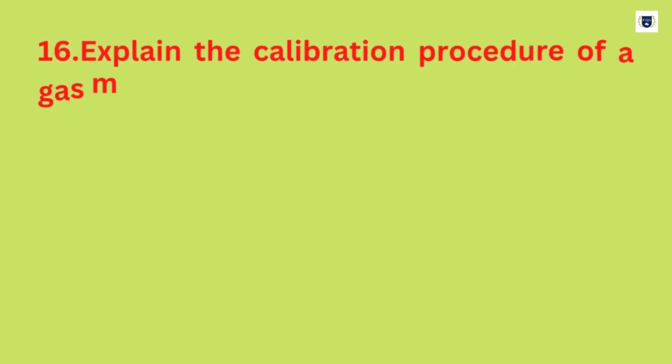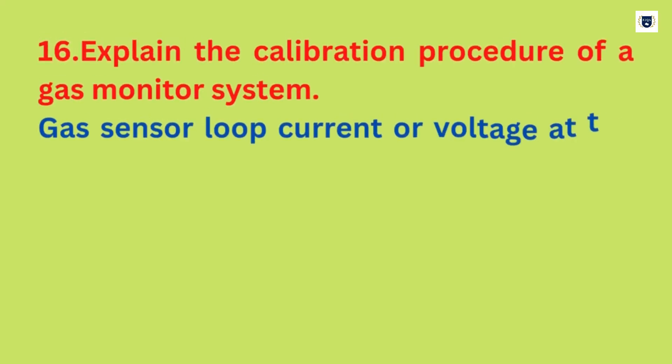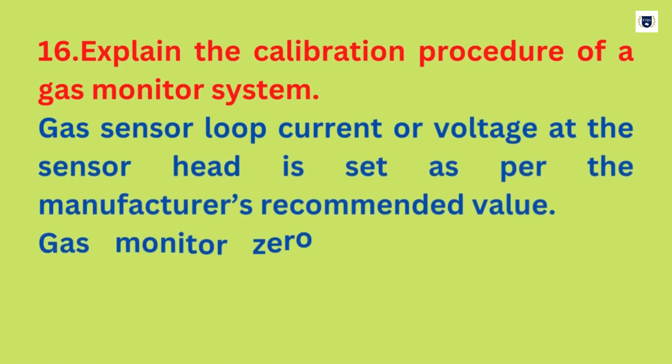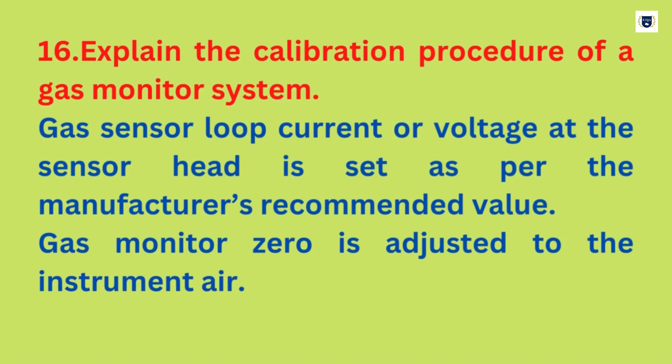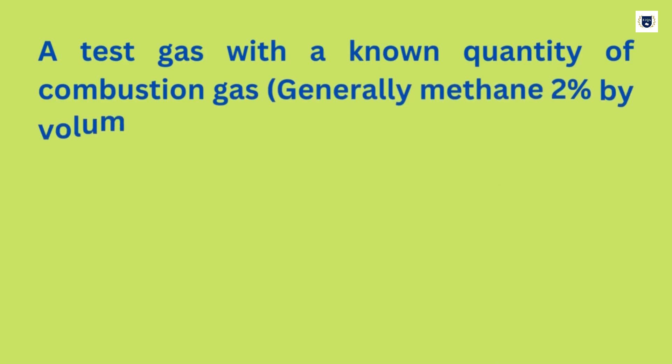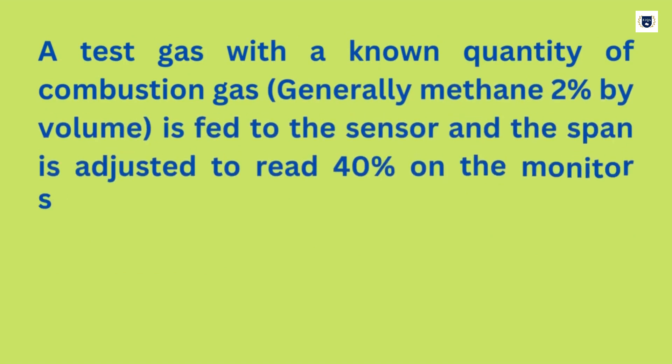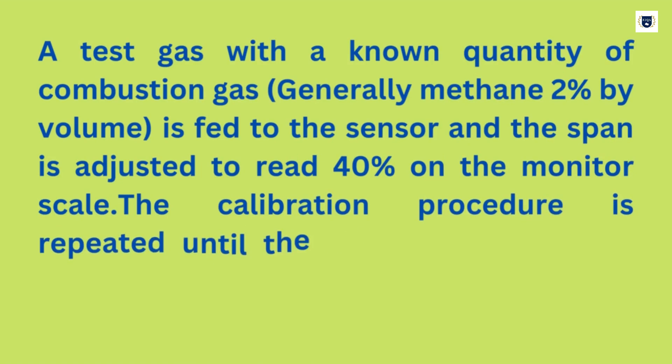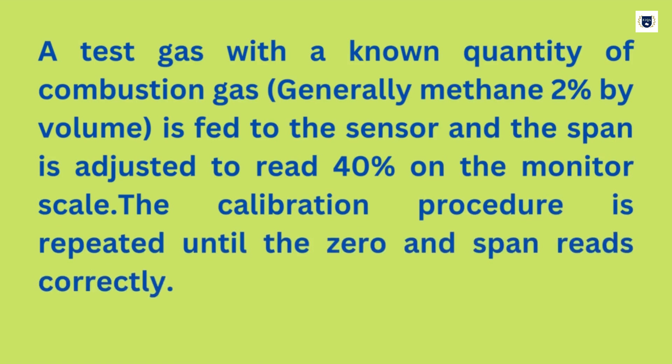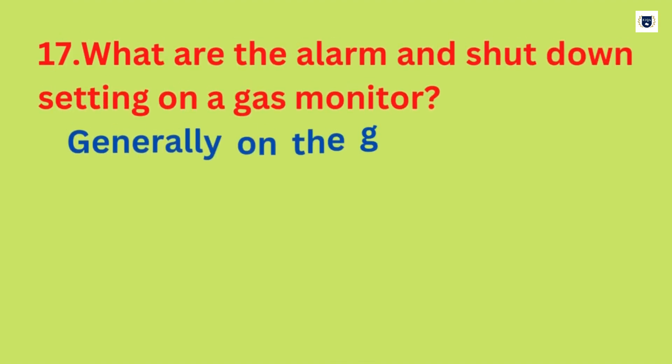Explain the calibration procedure of a gas monitor system. The gas sensor loop current or voltage at the sensor head is set as per the manufacturer's recommended value. The gas monitor zero is adjusted to instrument air. A test gas with a known quantity of combustion gas — generally methane 2 percent by volume — is fed to the sensor and the span is adjusted to read 40 percent on the monitor scale. The calibration procedure is repeated until zero and span read correctly.